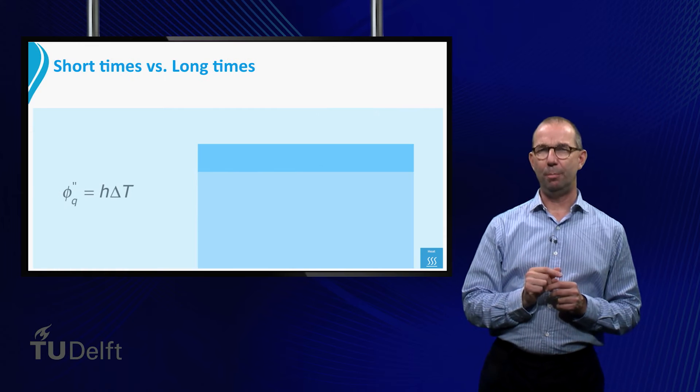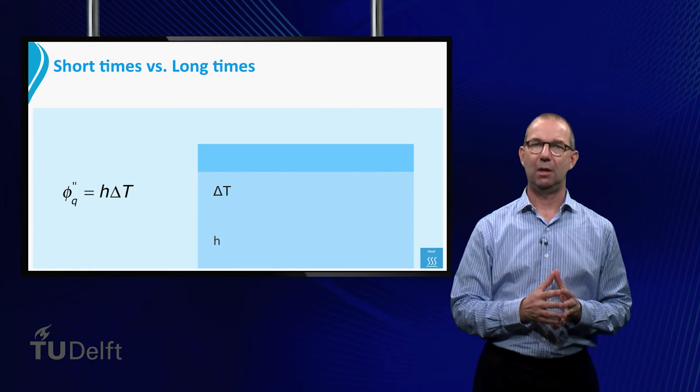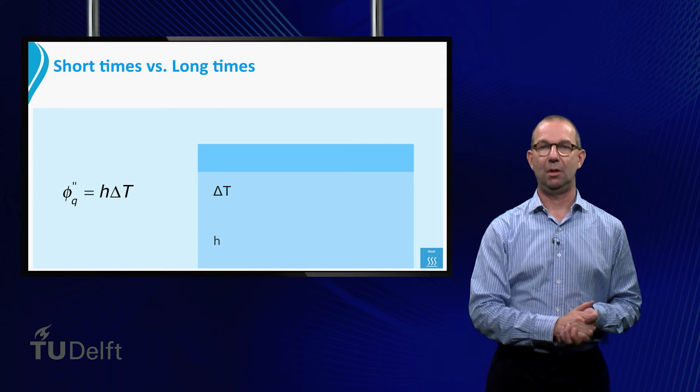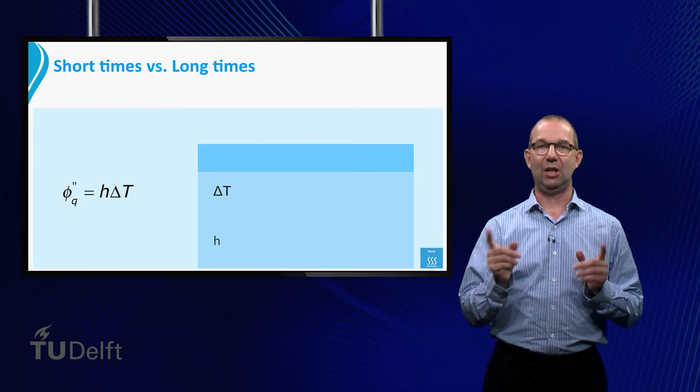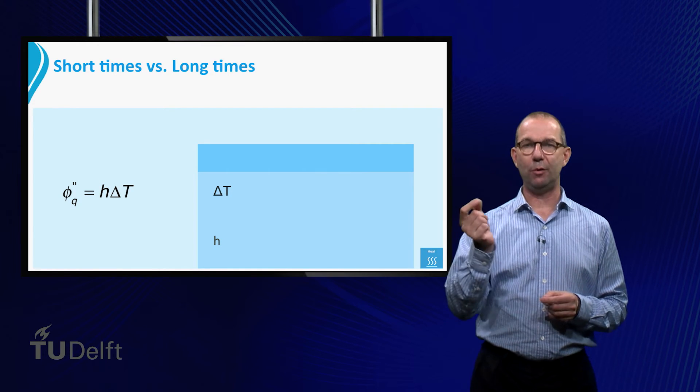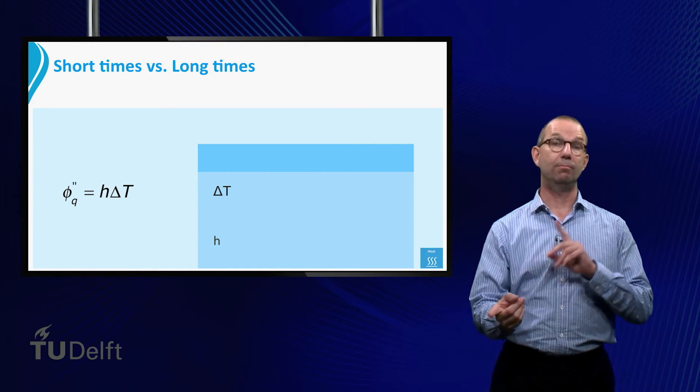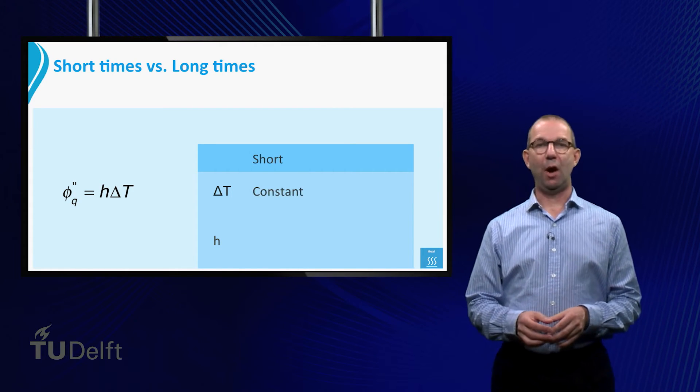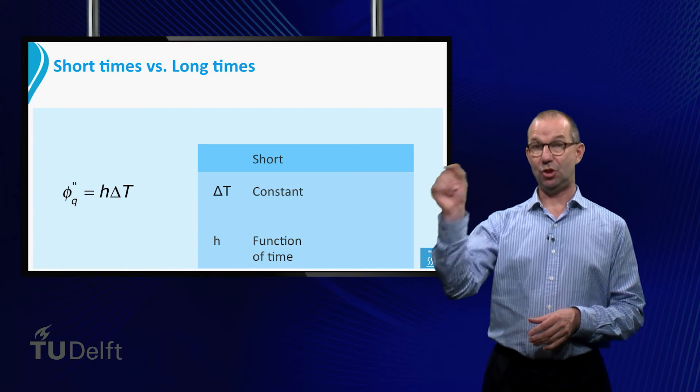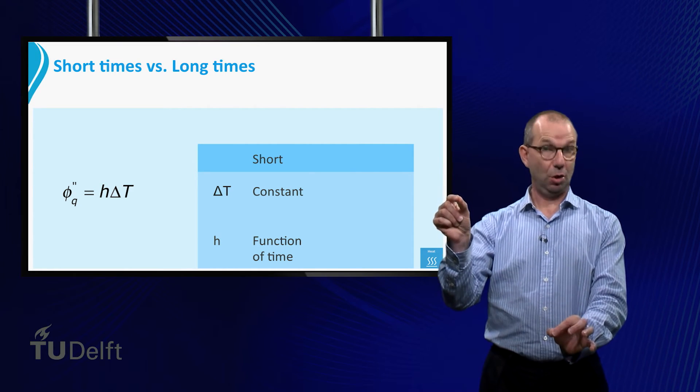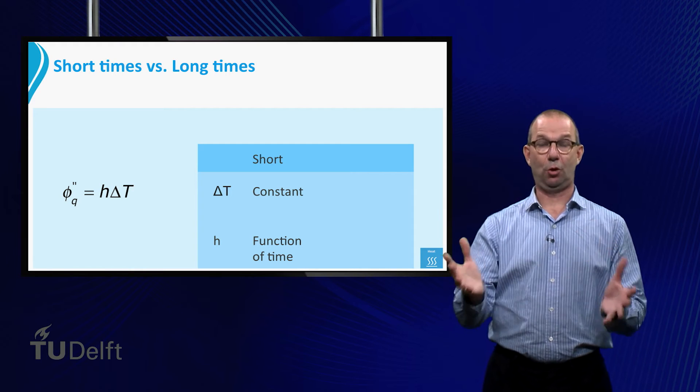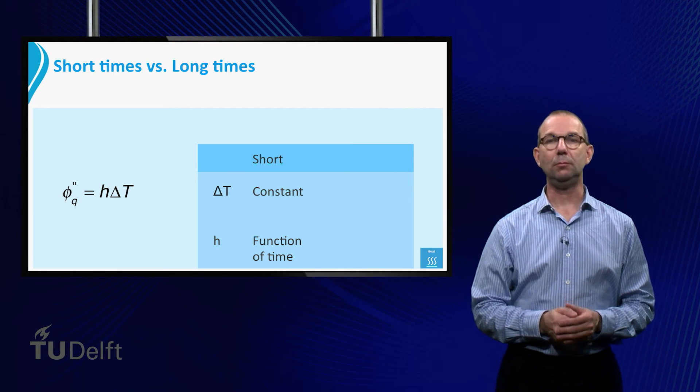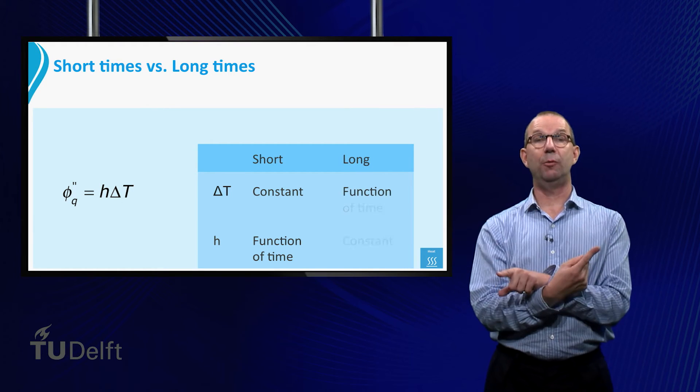It is good to compare the short times to the long times. We can make a simple table with the most important characteristics. We are going to look at the heat flux and compare the driving force and the heat transfer coefficient for short and long times. For short times we found that the driving temperature difference T1 minus T0 is a constant. The heat transfer coefficient, however, was a function of time.